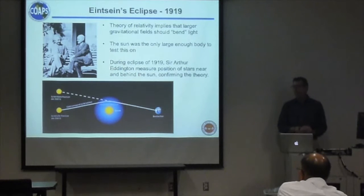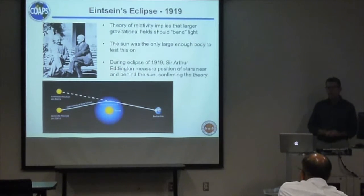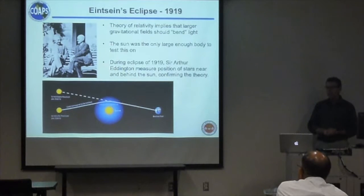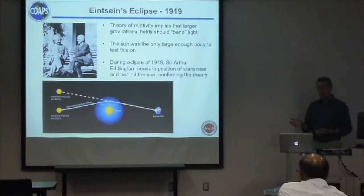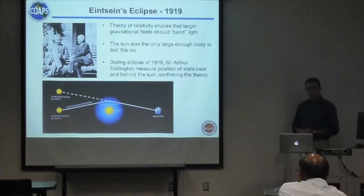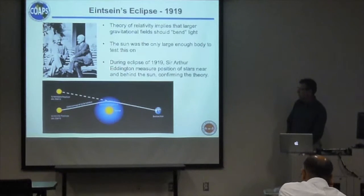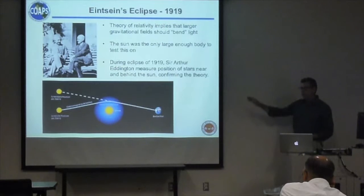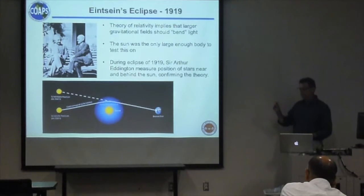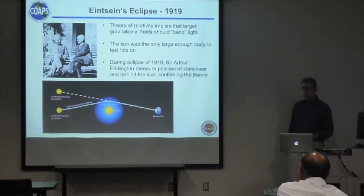A very influential eclipse is what we call Einstein's Eclipse in 1919. His theory of relativity was fairly new—only a few years old and not getting wide acceptance. Part of the theory says that in a large enough gravitational field, light will bend. The only gravitational field large enough to observe this is the sun. Sir Arthur Eddington set up a careful observation during the eclipse of 1919 and was able to see the displacement of stars near or even behind the sun during the eclipse, proving that light did indeed bend by the proper amount. It was after this that the theory of relativity gained widespread acceptance.